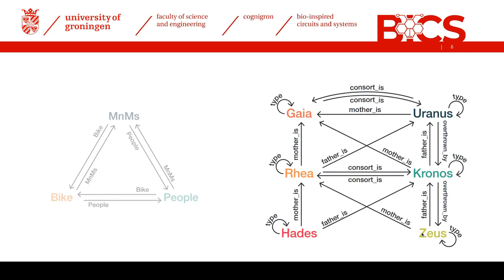A clear example of state-dependent transitions: if we have six states from the Greek pantheon, and we start in the attractor state for Zeus, giving the stimulus 'father is' should make the network jump to Chronos. However, if we're already in the state Chronos and give the input 'father is', we want it to jump to Uranus. This is a pure example of the state-dependent switching we want to embed within our Hopfield network. Now I will describe how we do it.